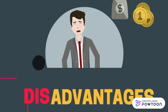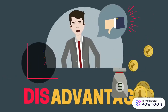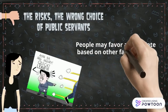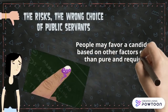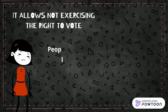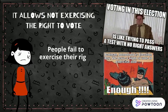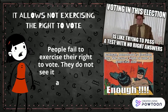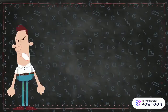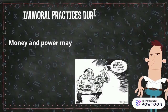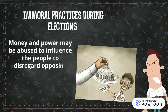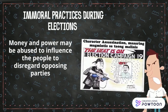On the other hand, the downsides of democracy include: There is the wrong choice of public servants — people may favor a candidate based on factors other than pure and required capability. Next, it allows for not exercising the right to vote; people fail to exercise their right to vote and do not see it as a privilege, taking the process less seriously. Finally, it may involve immoral practices during elections, where candidates use muscle power to draw the majority of votes, even trying to tarnish their opponent's reputation.